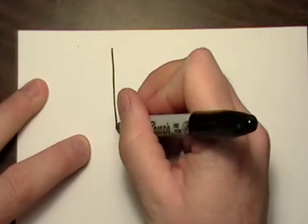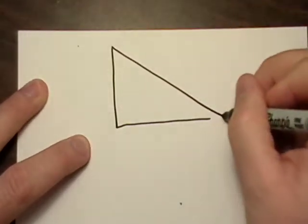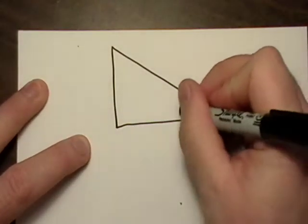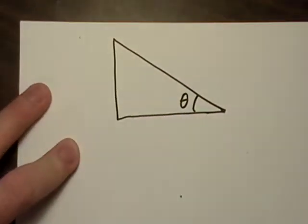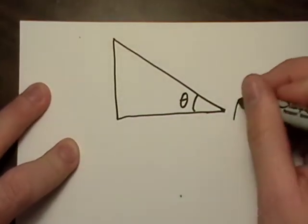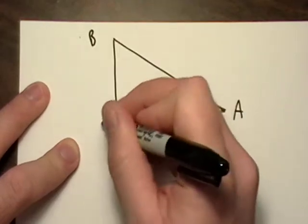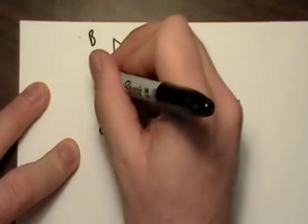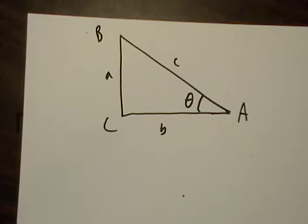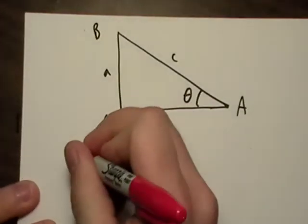So it looks like I have a little bit more time. I'm actually going to draw another triangle again. And we're going to talk about theta again. Here's A, B, C.